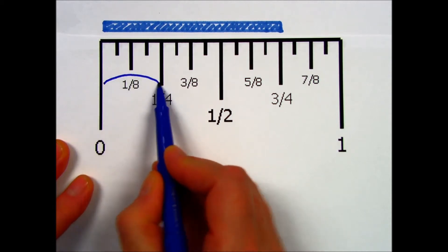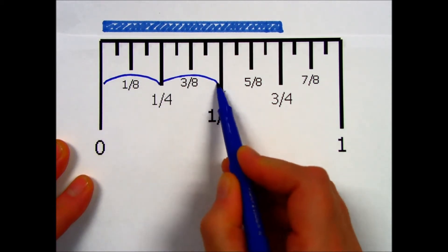If I'm going to measure this object using quarters, I have 1 quarter, 2 quarters, 3 quarters.